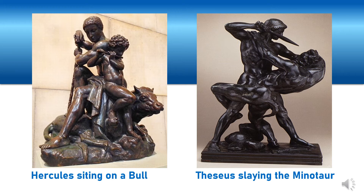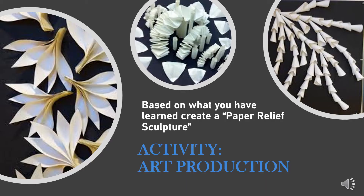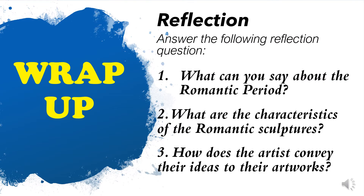We have reached the end of our lesson for today. We may now proceed with our activities. Activity 2: Art Production. Based on what you have learned, create a paper relief sculpture. Here are the examples. Let's proceed to the wrap-up section. This section summarizes the concepts and applications of our lesson. Write your answer in your notebook. You may pause the video if you need more time. Answer the following reflection questions: 1. What can you say about Romantic Sculptures? 2. What are the characteristics of Romantic Sculptures? 3. How does the artist convey their ideas through their artworks?